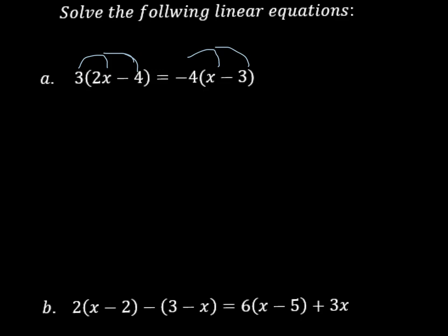So 3 times 2x is going to give us 6x, and then 3 times negative 4 gives us negative 12, and then that's equal to negative 4 times x is negative 4x, and then negative 4 times negative 3 is a positive 12.